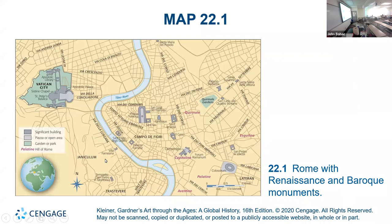This is a map of Rome with the Renaissance and Baroque monuments. They could have easily done the map of Florence as well, but bottom line is that the Vatican reasserts its power in this century. There were developments in the north: we see the Reformation, and we see the Counter-Reformation coming right out of Vatican City.